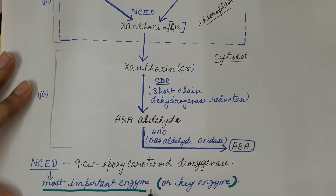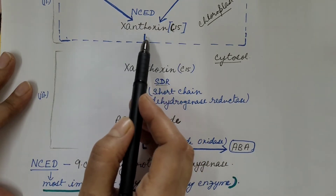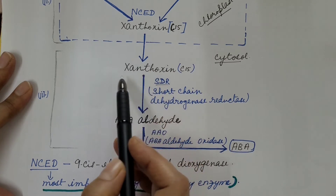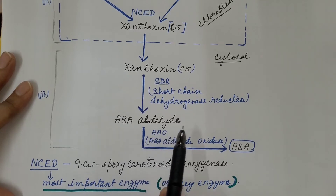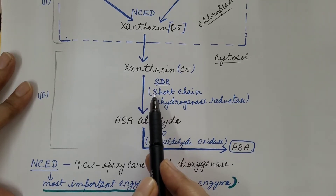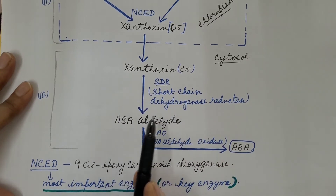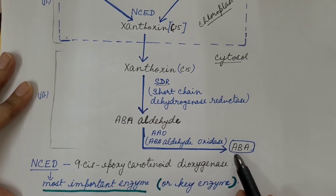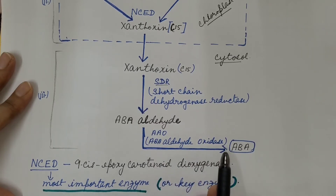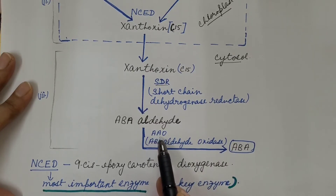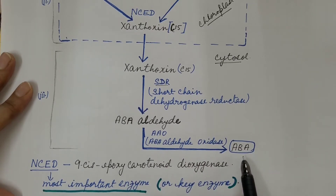All-trans-violaxanthin is either converted into neoxanthin, which is then converted into 9-cis-neoxanthin, or all-trans-violaxanthin is directly converted into 9-cis-violaxanthin. Then 9-cis-neoxanthin or 9-cis-violaxanthin is converted into xanthoxin, which is a 15-carbon compound, catalyzed by the enzyme NCED — 9-cis-epoxycarotenoid dioxygenase — which is the key enzyme. Xanthoxin, produced in the chloroplast, then enters the cytosol, where it is converted into abscisic acid aldehyde by short-chain dehydrogenase/reductase (SDR), and then abscisic acid aldehyde is oxidized to abscisic acid by abscisic acid aldehyde oxidase (AAO).